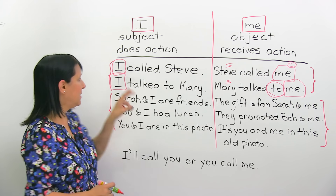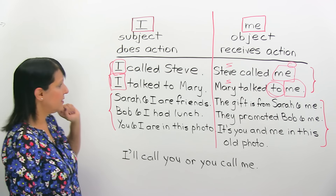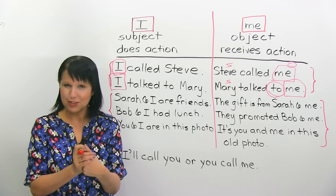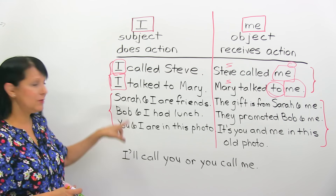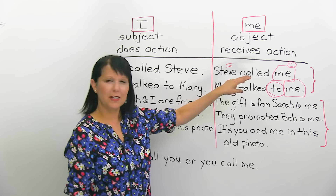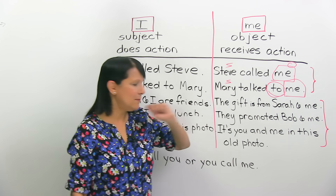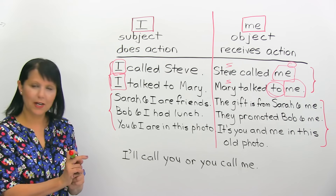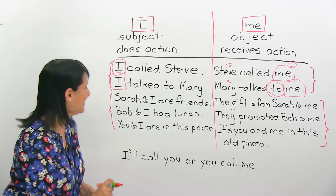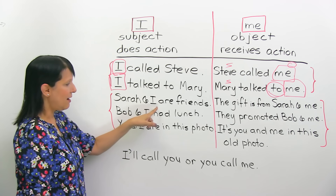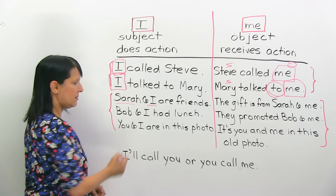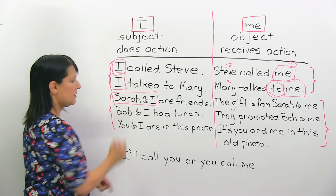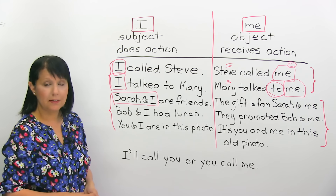So that's the basic stuff — when we have one subject or one object. Now, where do people make most of the mistakes? Somehow when we have multiple subjects or multiple objects. Even though they know this rule most of the time, somehow when there are multiple subjects or objects, people get a little bit confused. Let's clarify all your confusion right now. Sarah and I are friends. Here we have more than one subject — a compound subject — but we still have to say I because it's a subject. Sarah and I, not Sarah and me.